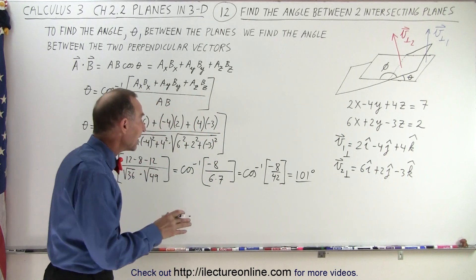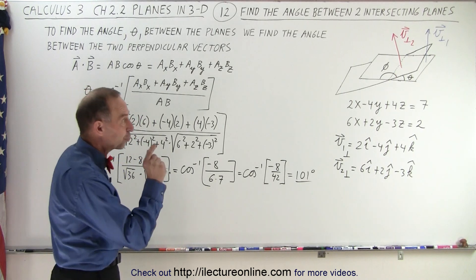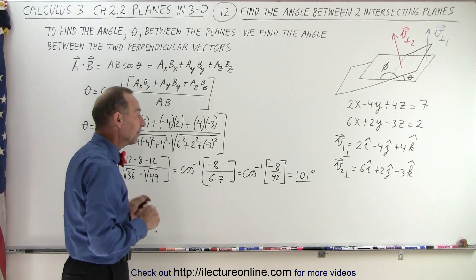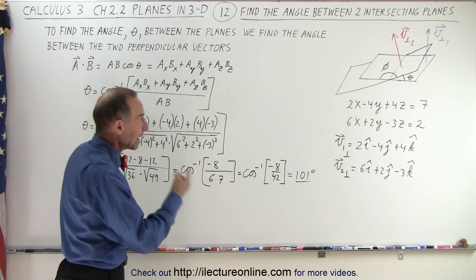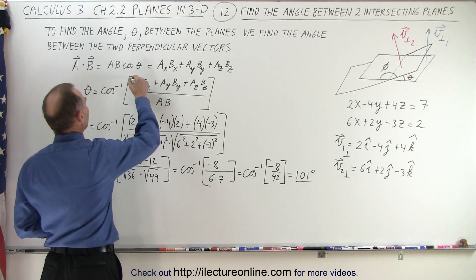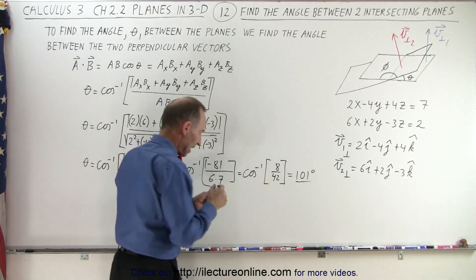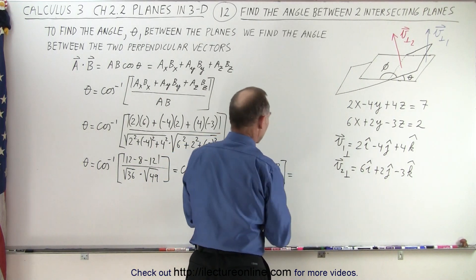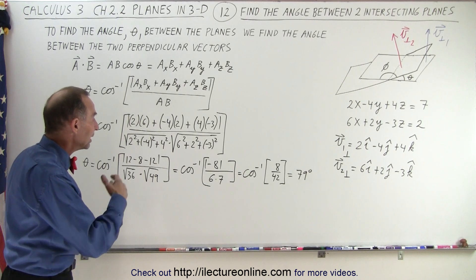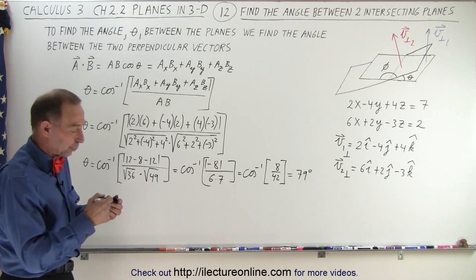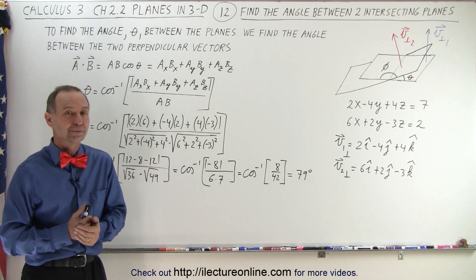Here's an example where we didn't find theta — we actually found phi. We can remedy that by taking the absolute value of the numerator, and then we would have found theta. To make sure we find the acute angle, we put absolute value signs around this value, giving us positive 8 over 42. When we calculate that angle, we get 79 degrees — which is 180 minus 101. That is the best way to ensure we find the acute angle, and that is how we find the angle between two planes that intersect one another.